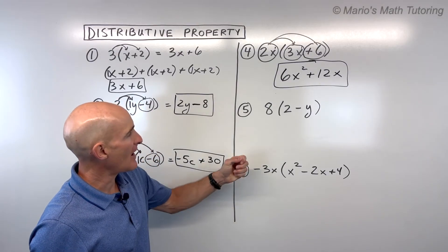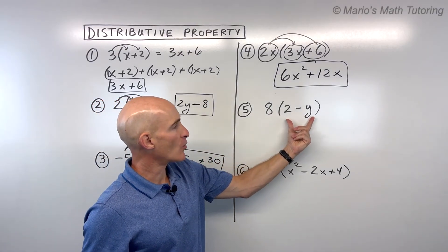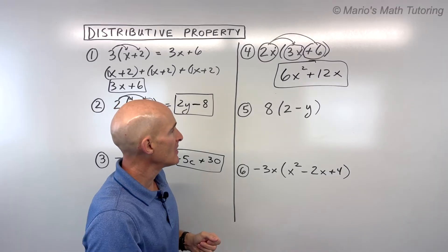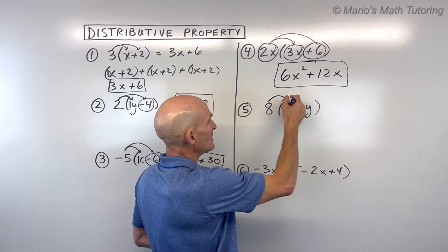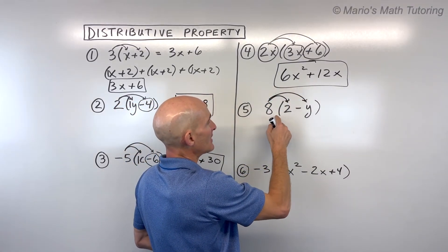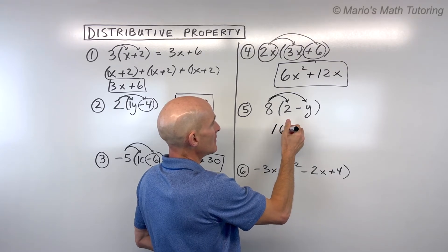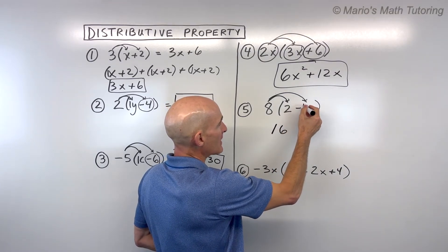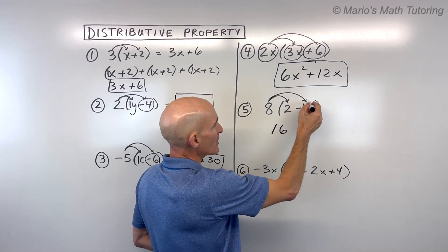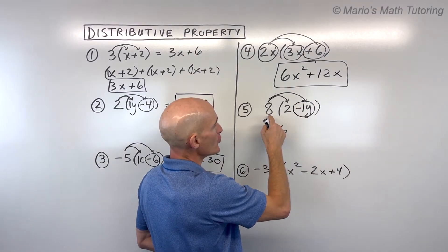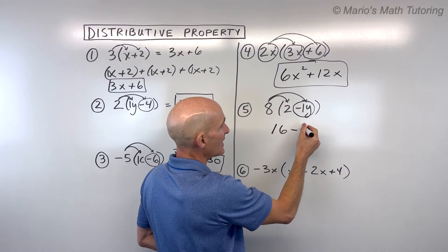Let's look at number five. So number five, we have eight times the quantity 2 minus y. So we're going to take the eight. We're going to distribute into the parentheses. Eight times two is 16. This minus is really like a minus 1y, right? So negative 1y, we're going to capture this, treat this whole thing like a group. Eight times negative 1 is negative 8.